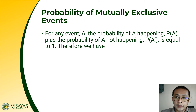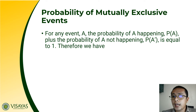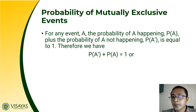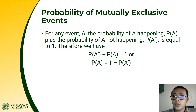For any event A, the probability of A happening plus the probability of A not happening equals 1, which is 100%. Therefore, the probability of A equals 1 minus the probability of A prime (A not happening).